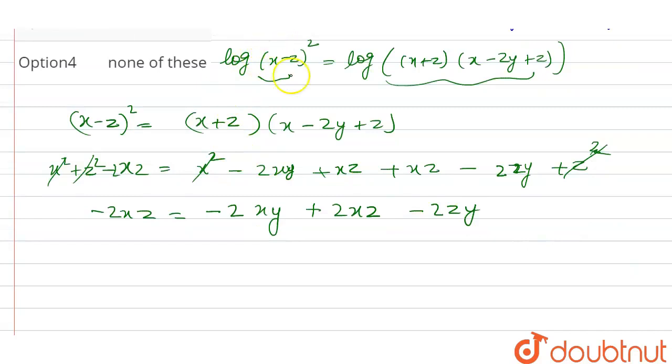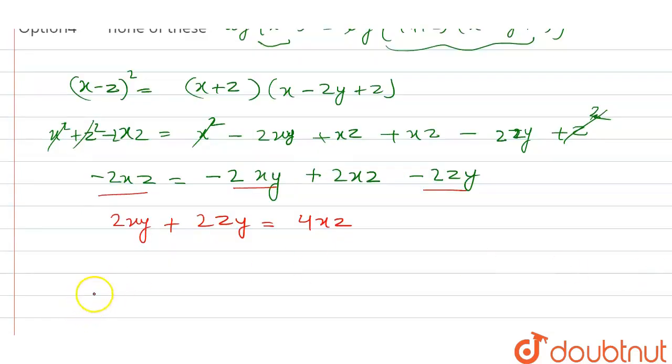So now we will move these two terms to LHS and this term to RHS. So 2xy plus 2zy is equal to 4xz. We will take two common, xy plus zy is equal to 2xz.